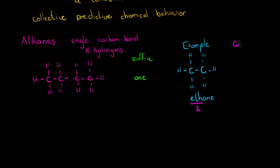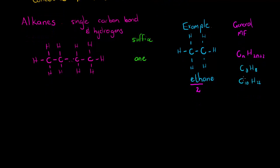The general molecular formula for alkanes: for every carbon we have twice as many hydrogens, because each carbon has at least two hydrogens. The carbons at the ends each have one additional hydrogen, and since there are two ends, we add two. So for example C₃H₈ (3×2+2=8), or C₁₀H₂₂. These are all examples of molecular formulas for alkanes.